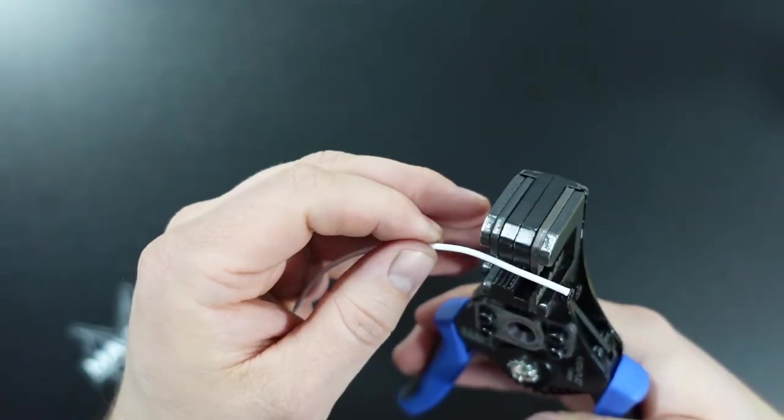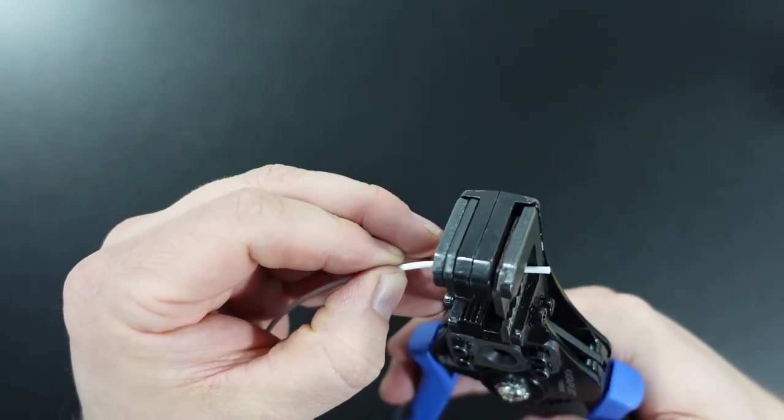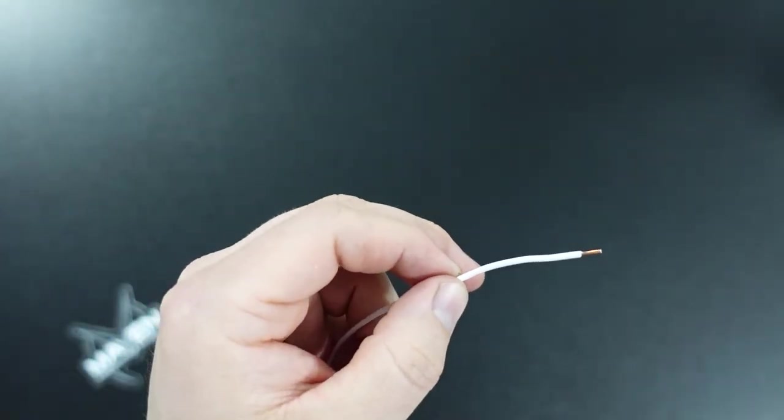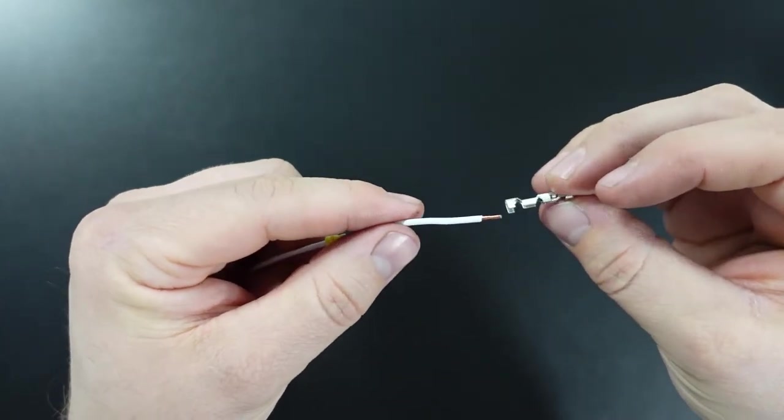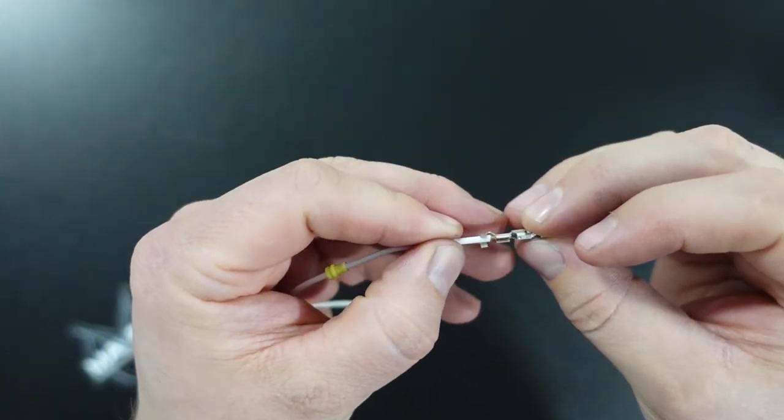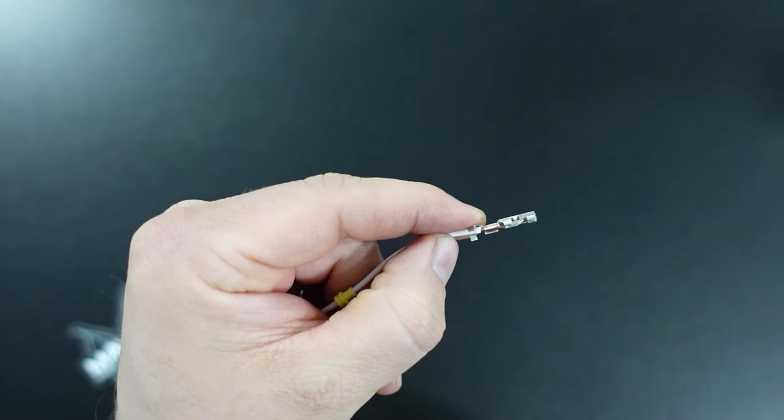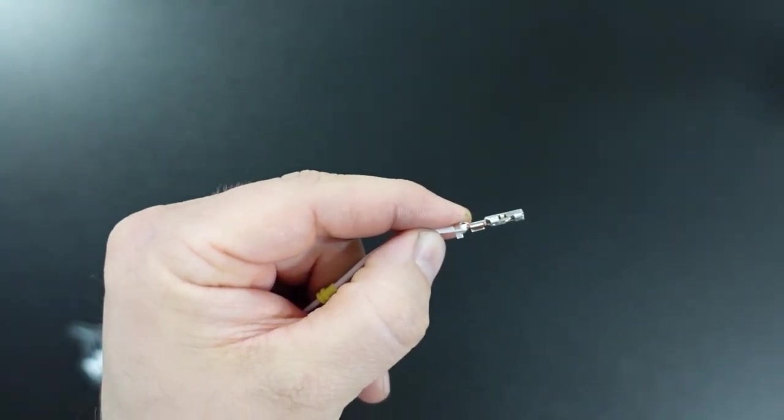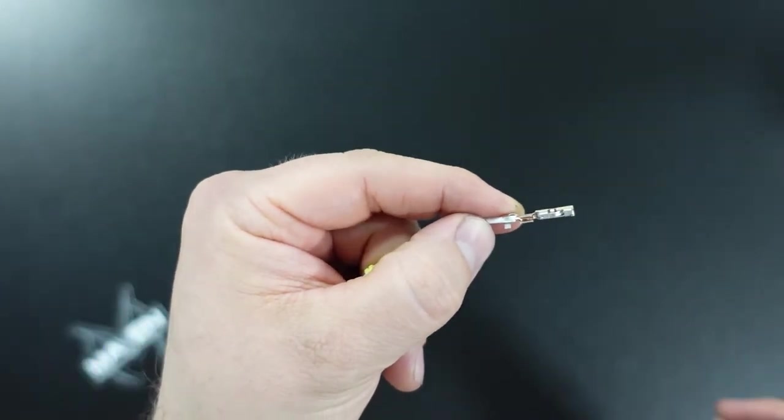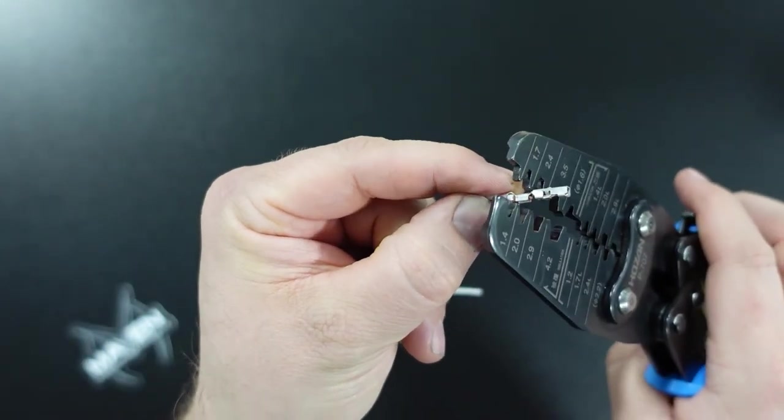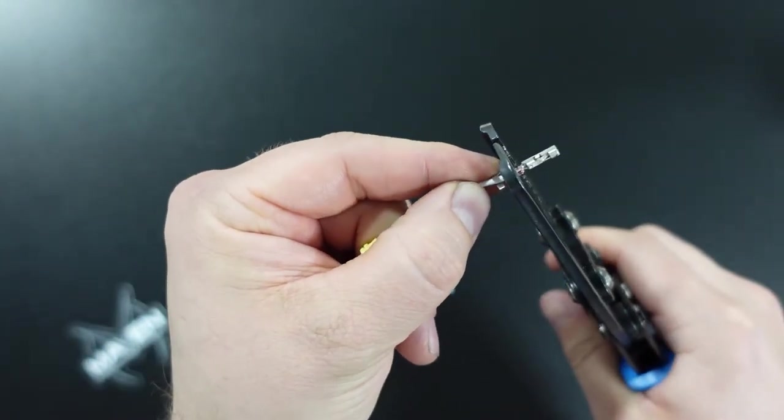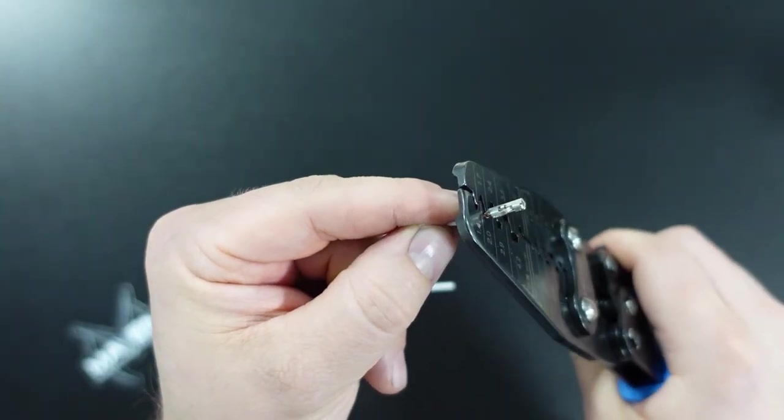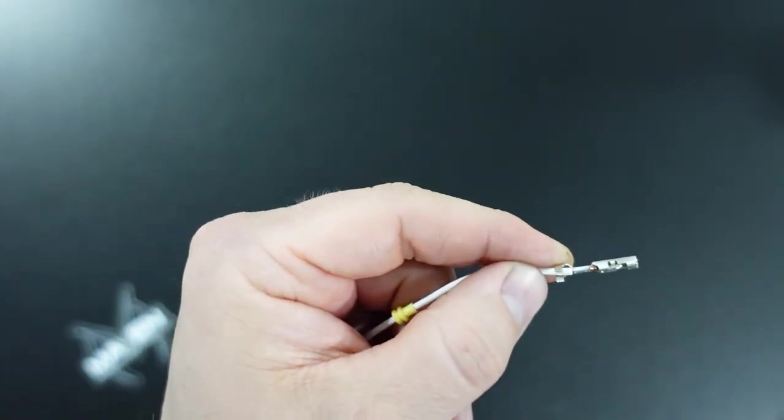The terminal has actually got two crimp locations, a primary and a secondary. Here's the terminal. You're going to lay the conductors inside the wire inside that first one. You can see that there's two spots to crimp the wire. The first one is the primary and it is simply to actually connect the wires to the terminal. Just like so.